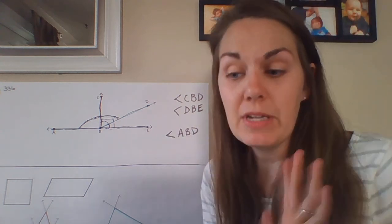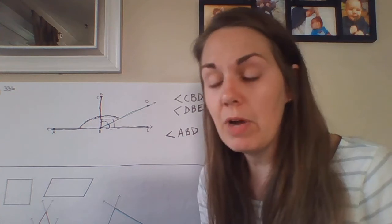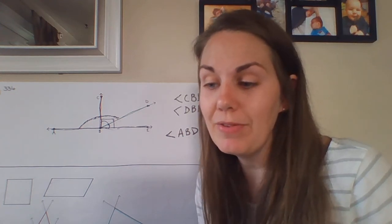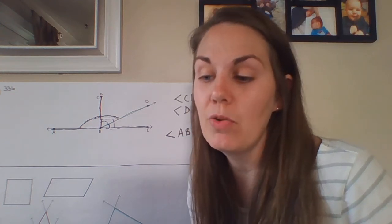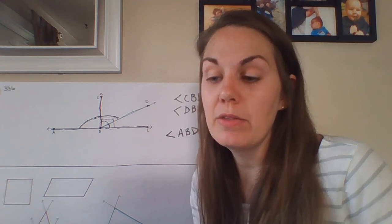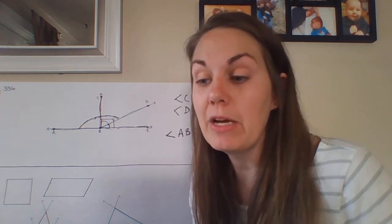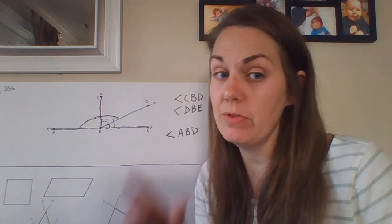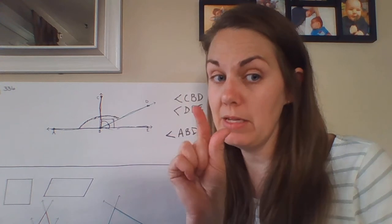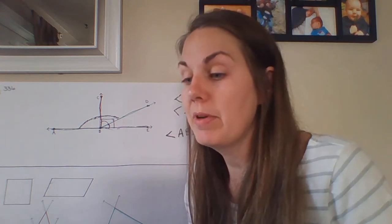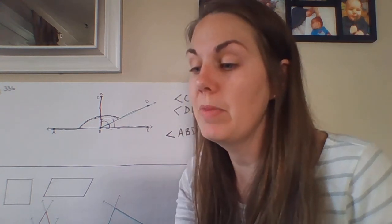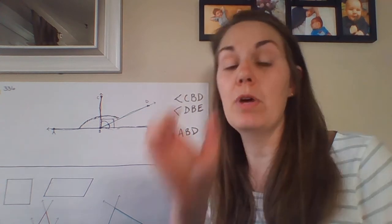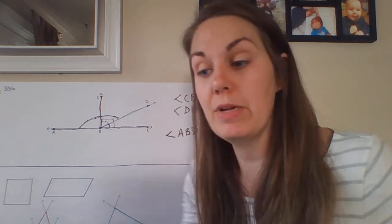I'm going to skip number 11. I'd like you guys to try numbers 12 and 13 on your own. Number 12 asks how many acute angles are in the shape below — those are angles less than 90 degrees. Number 13 asks how many obtuse angles are in the shape below — those are angles greater than 90 degrees.